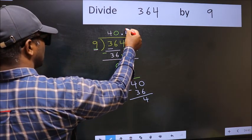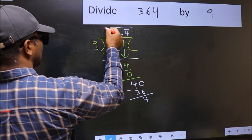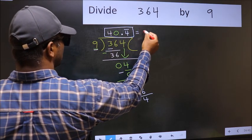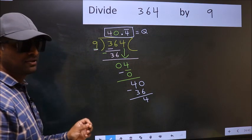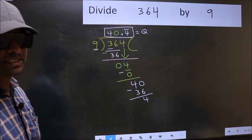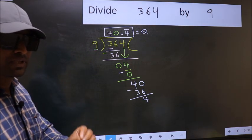That means we get bar on this number. So this is our quotient. Did you understand where the mistake happens? You should not do that mistake.